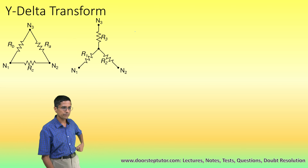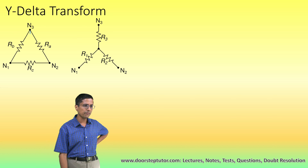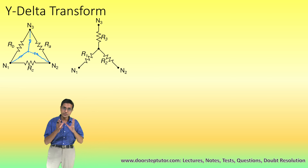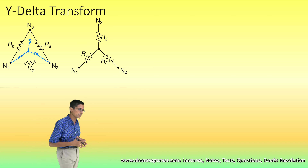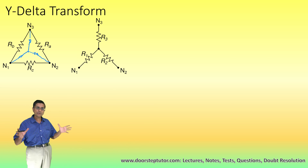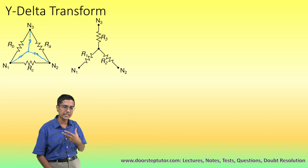The main motivation for doing this is that this transform helps us solve the Wheatstone bridge, which we know is very important from an examination perspective. With the help of this transform, we can solve the Wheatstone bridge without using the Kirchhoff laws. That is the main motivation and we will see how to do that in a moment.